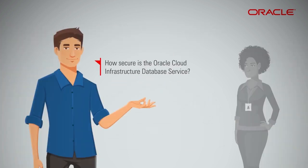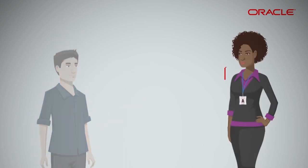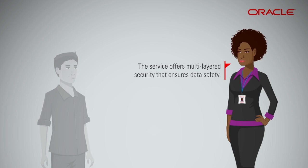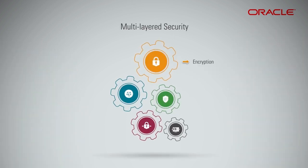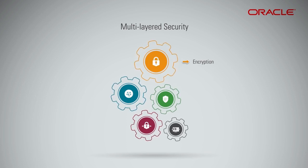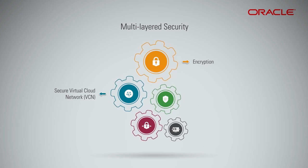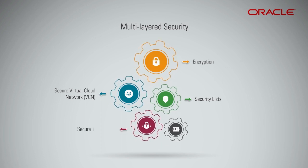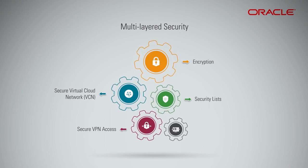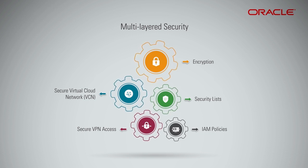How secure is the Oracle Cloud Infrastructure database service? The service offers multi-layered security that ensures data safety. Encryption: meet your database security needs with Auto-TDE, or Transparent Data Encryption, and encryption at rest. Secure Virtual Cloud Network: deploy into a secure and private virtual cloud network that has no access to the Internet unless you enable it. Security Lists: leverage security lists to configure inbound and outbound access policies at the infrastructure level. Secure VPN access: set up VPN to the virtual cloud network to access your databases securely from your own network. IAM policies: define IAM policies to manage authentication and authorization of your environment.